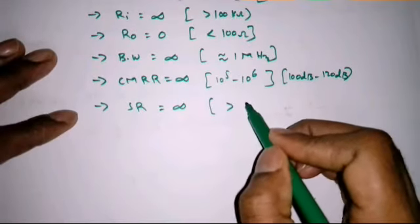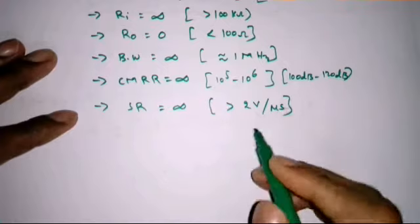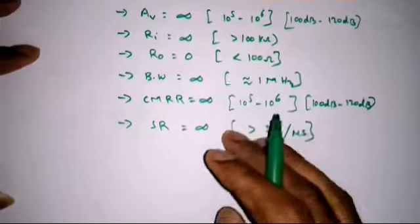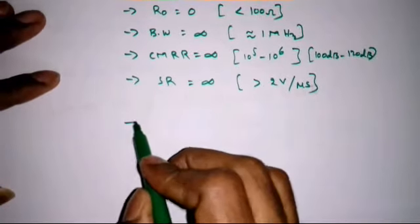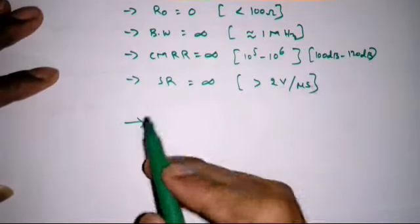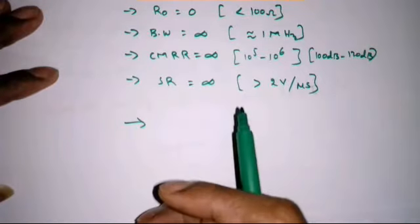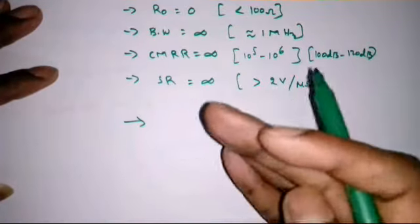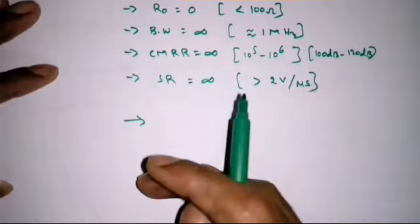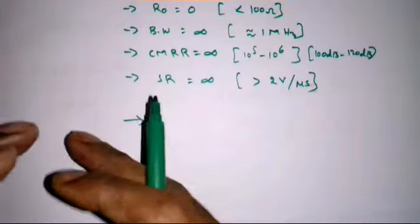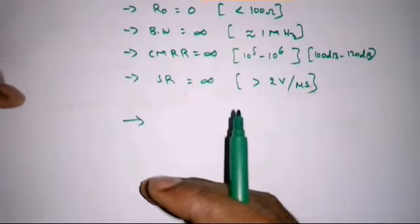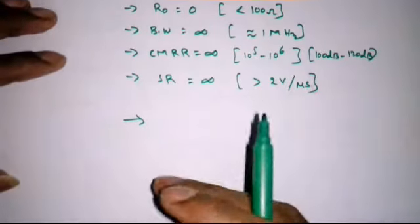The slew rate should be greater than 2 volts per microsecond. Then we discussed the applications of the operational amplifier: it can amplify AC and DC signals, perform mathematical operations like adding, subtracting, logarithmic, integration, and differentiation, and it is used in the design of filters, oscillators, comparators, and wave shaping circuits.